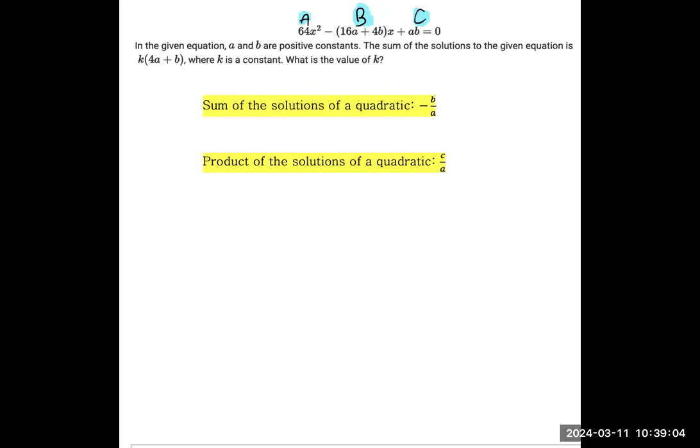Then the sum is negative B, and B is negative 16A plus 4B. Don't include the X in that, because when we talk about the A, B, and C of a quadratic, it's the things in front of the X: the 64, the negative parentheses, and then the AB at the end. So that's negative B over A, which is 64. The question says that is equal to K times 4A plus B.